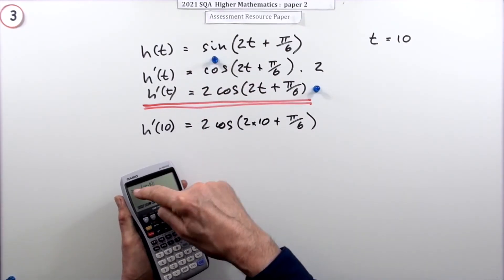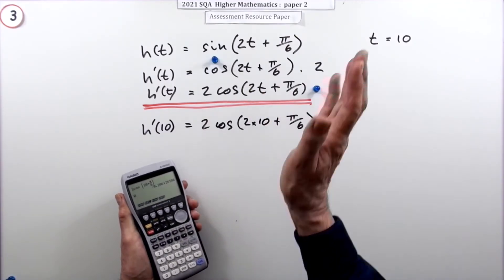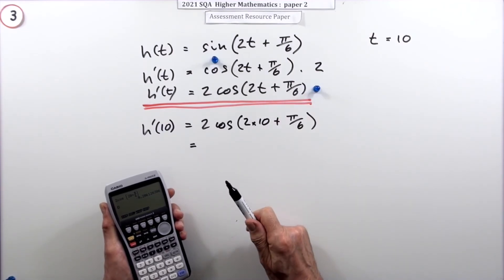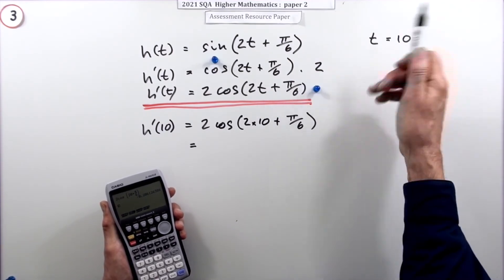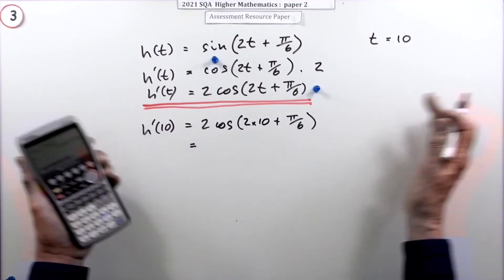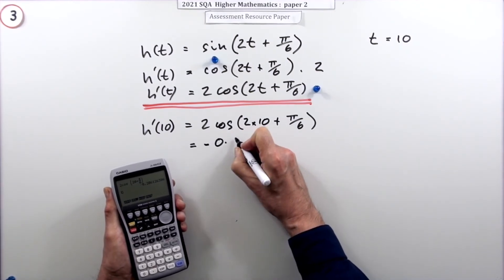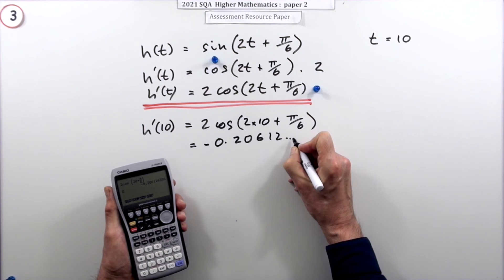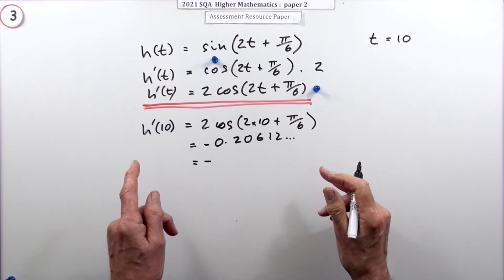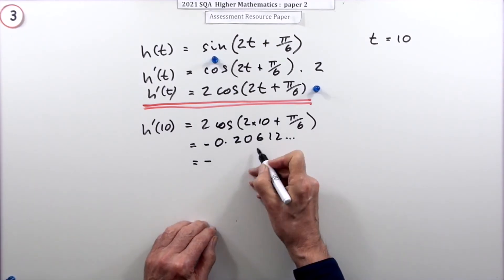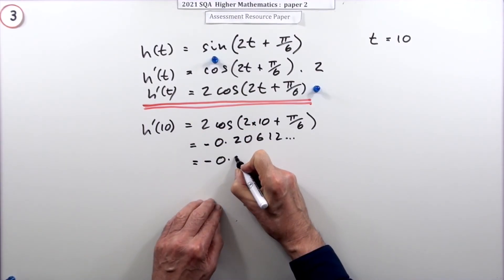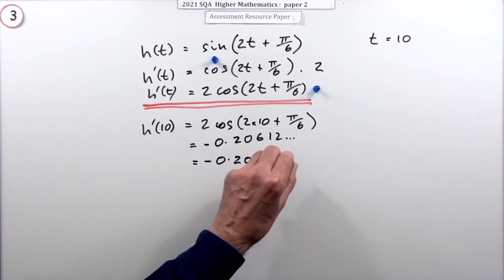Just enter it and press equals. Now, everything here is exact — π/6 is exact and 10 is exact by implication — so you're free to give as many decimal places as you like. The answer is 0.20612..., which rounds to 0.206 to three decimal places, since that's roughly the same accuracy as one decimal place for degrees.